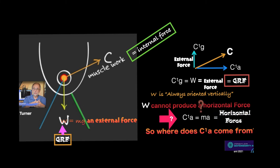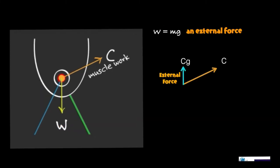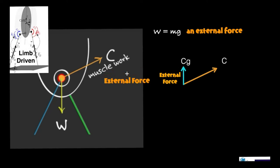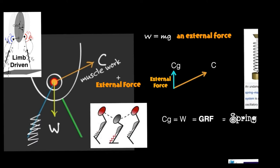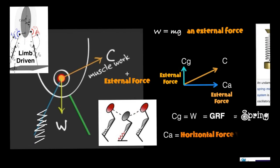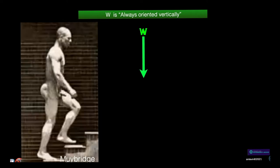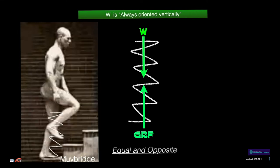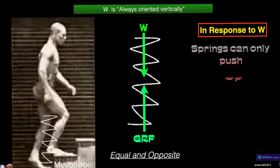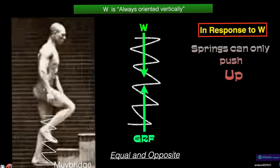So how do we get the body to move? Since muscles acting on their own can't move us, we need an external force. Here is where the spring mass model comes in: the springs in our bodies are loaded by the ground reaction force, store the energy, and put it back into the system. But that only pushes us straight up into the air. Vertical forces can only produce vertical acceleration, and horizontal forces can only produce horizontal acceleration. So in response to W, forces can only push up — they cannot push forward.